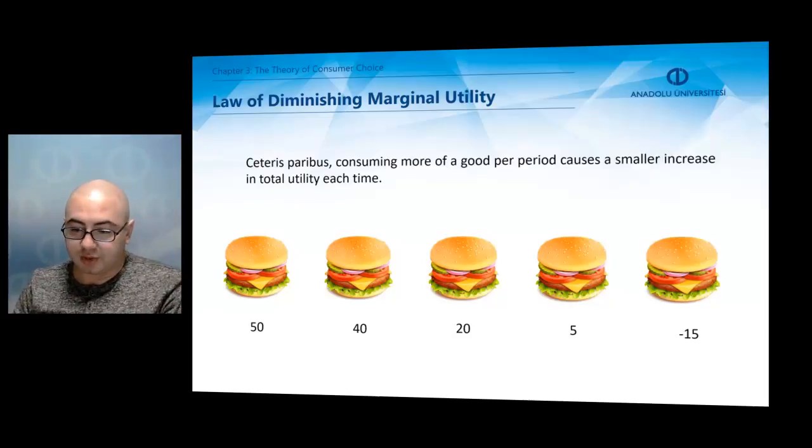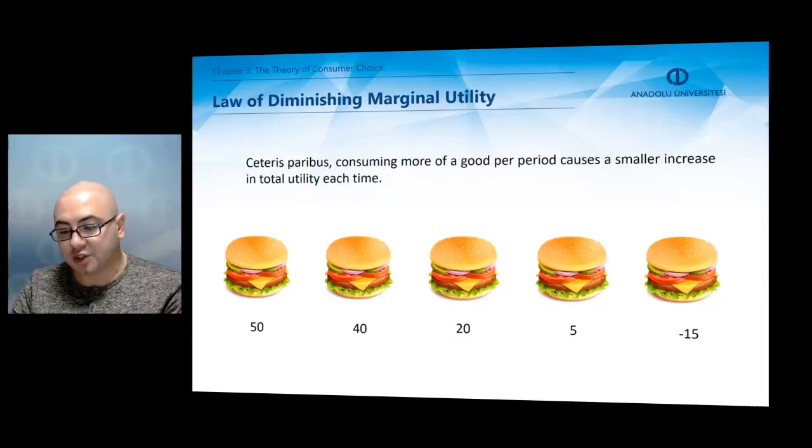However, after eating the fourth hamburger, many consumers feel sick, and after that point, eating more causes harm. So, eating the fifth hamburger causes our total utility to decrease. The law of diminishing marginal utility tells us that continuing to consume a good gives us less utility and, at some point, even negative utility.